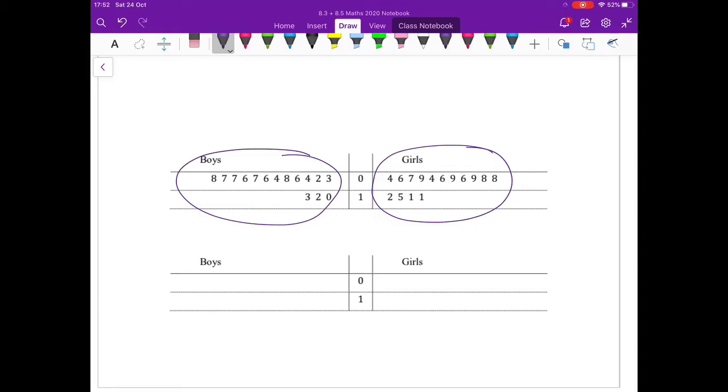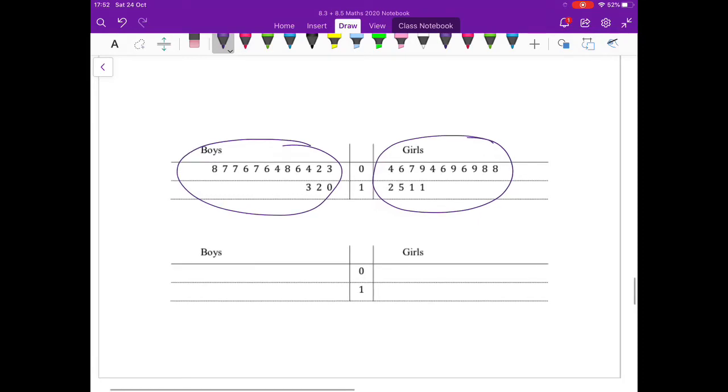Let's start with the boys. We're going to get 2 as the lowest value here, so we go 2, then we have a 3, and then two 4s, and we continue in this manner.